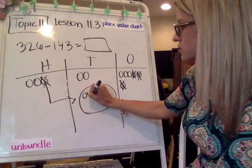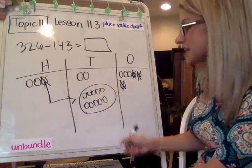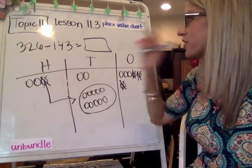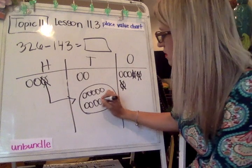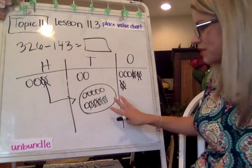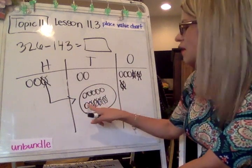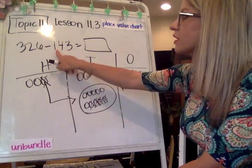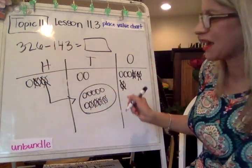One of the hundreds is worth 10 tens. Remember, draw your circle. 1, 2, 3, 4, 5, 6, 7, 8, 9, 10. 10 tens is equal to 1 in the hundreds. Now I can take away 4 from my tens place. Notice how clean I'm trying to make this so that it's really easy to see when I'm looking back to count how many open circles that I have.